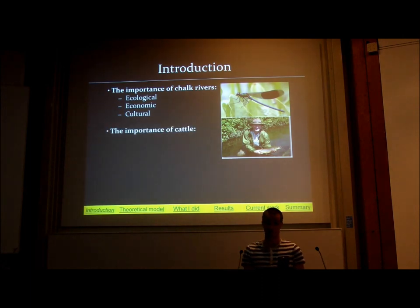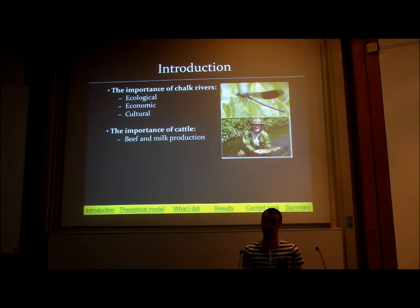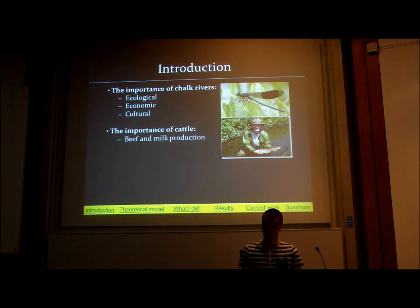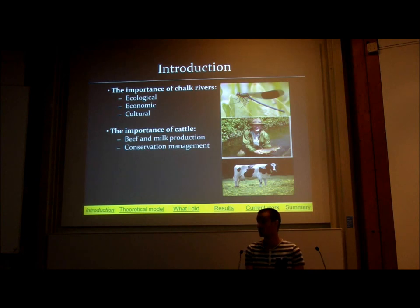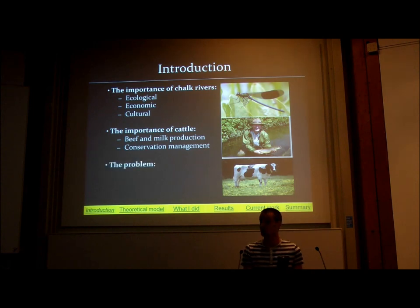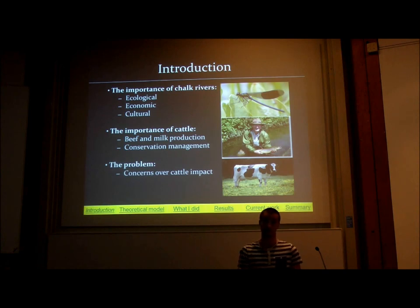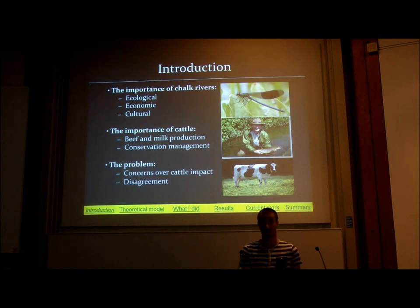What about cattle? Well, beef and milk production — pretty obvious. The amount of beef produced in the UK in 2008 was worth two billion pounds, and that doesn't even take into consideration leather and milk. For conservation management, numerous studies have shown that cattle can be used to maintain ecological diversity. But if a cow goes into a chalk river, those ecological, economic, and cultural factors could be affected. There's disagreement between different stakeholders about the effects of cattle grazing in chalk streams, and that disagreement stems from a lack of scientific knowledge.